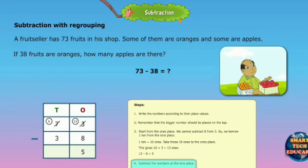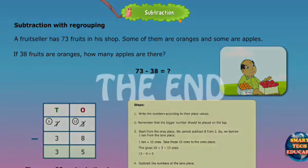Step 4: Subtract the number at the tens place. 6 minus 3 equals 3. There are 35 apples in the shop.